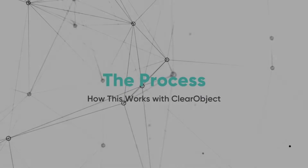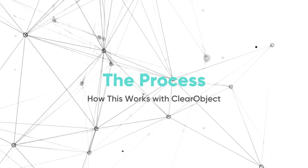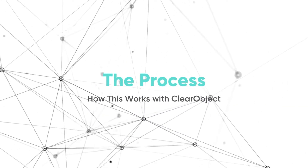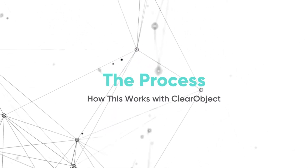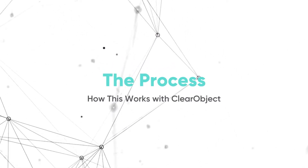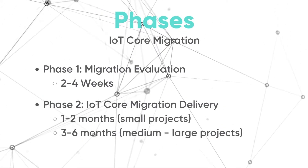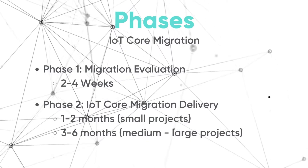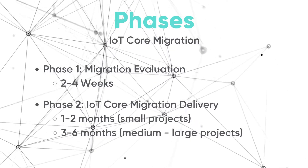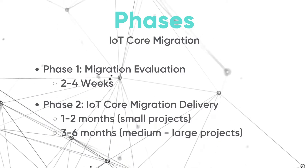So how does this work? Depending on the complexity of the project, migrations can take anywhere from one to two months for simpler migrations and up to three to six months for larger custom efforts. The IoT Core migration will happen in two phases: phase one is the migration evaluation, and phase two is the IoT Core migration delivery.